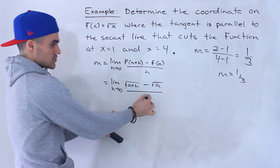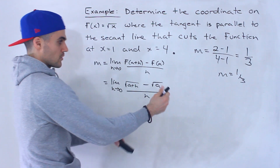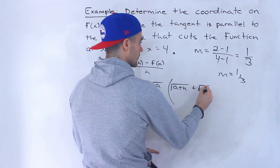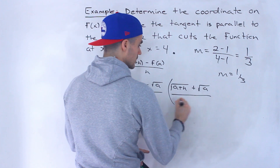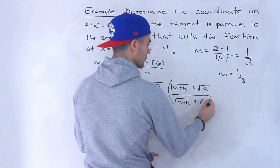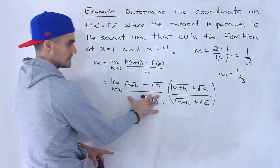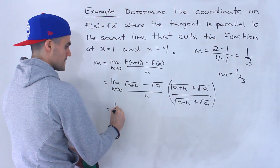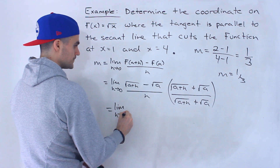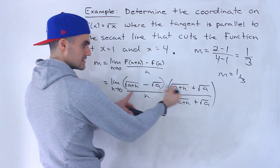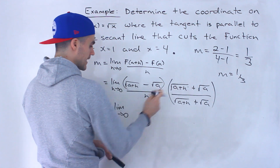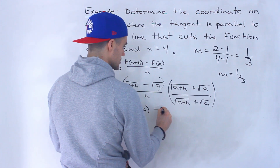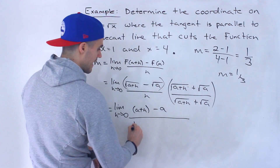We need to get rid of this h in the denominator in order to plug in 0 for h. The way we do that is to rationalize — multiply by the conjugate of the numerator, doing the same to the bottom. So we're multiplying by 1, keeping it the same. This times this — difference of squares — gives us (a + h) - a all over h, keeping the conjugate expression in the denominator separate.